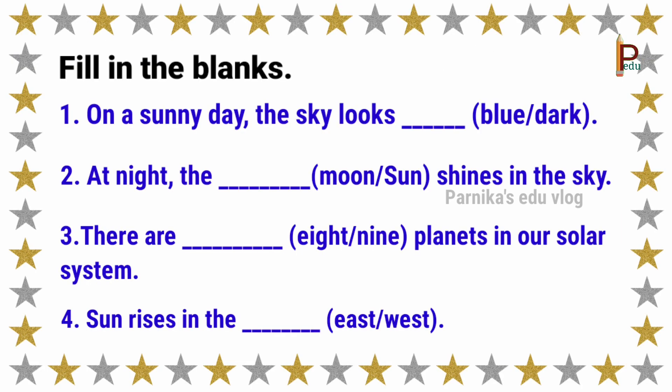Fill in the blanks. First: on a sunny day the sky looks — blue. Second: at night the moon shines in the sky. Third: there are eight planets in our solar system. Fourth: the sun rises in the East.